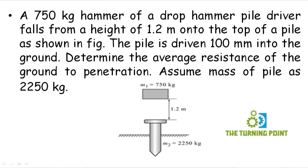A 750 kg hammer of a drop hammer pile driver falls from a height of 1.2 meters onto the top of a pile as shown in the figure. The pile is driven 100 mm into the ground. Determine the average resistance of the ground to penetration. Assume mass of the pile as 2250 kg.